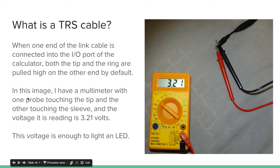In this image, I have a multimeter with one probe touching the tip and one touching the sleeve, and the voltage is reading 3.21 volts. As you can see, the black probe is touching the sleeve, the red probe is touching the tip, and it's reading 3.21, which is roughly 3.3.